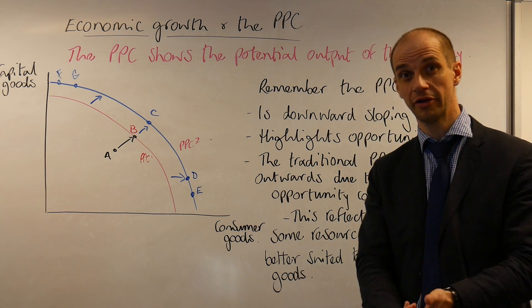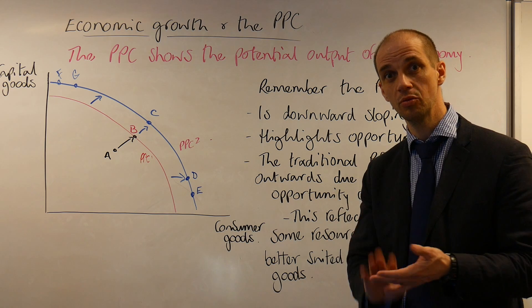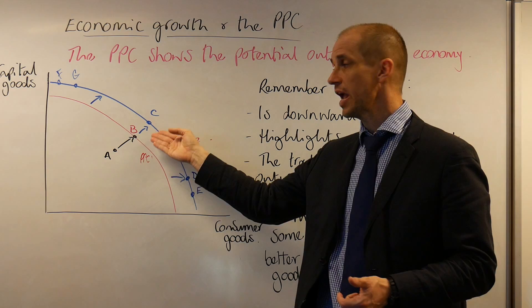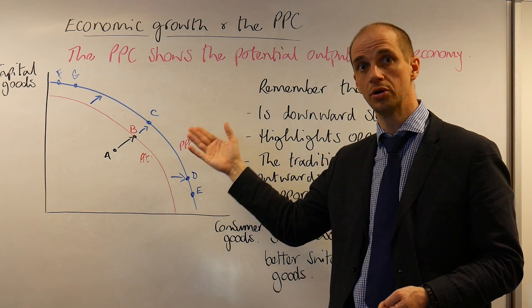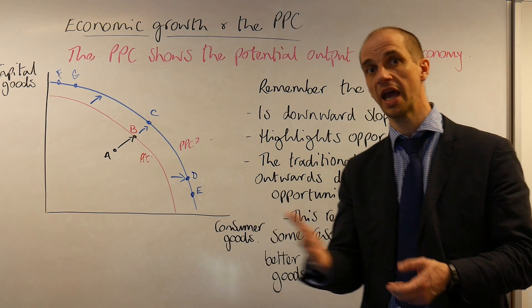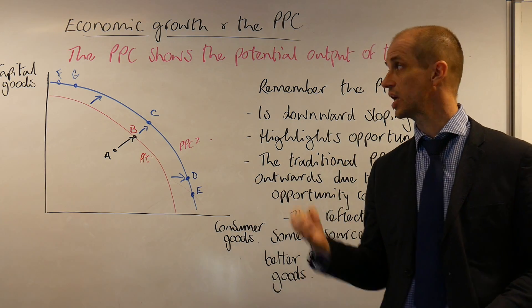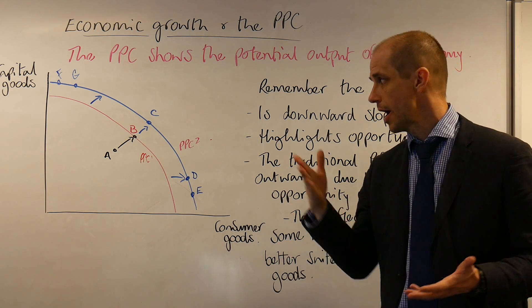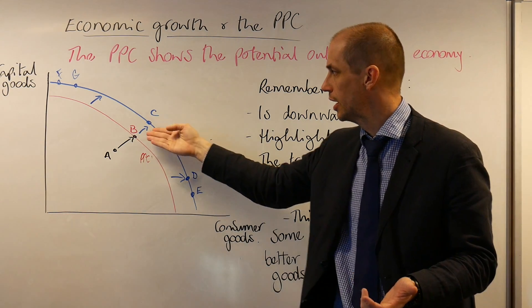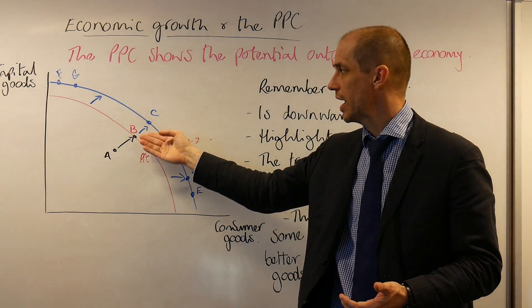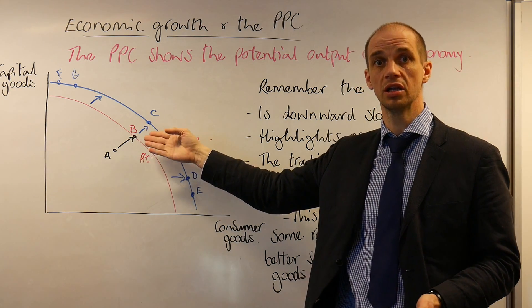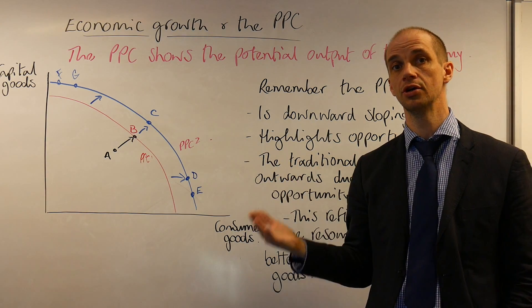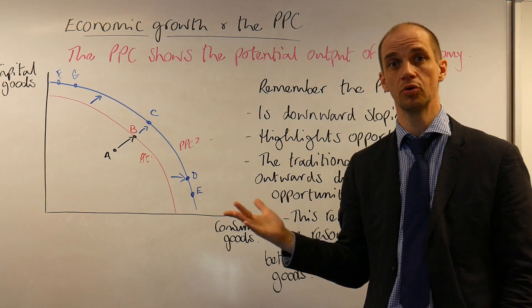Output is a function of land, labour, and capital, together with efficiency and technological progress. If the quality of those factor inputs improves — through better education, better innovation with regard to capital goods and technology, and better efficiency due to improved infrastructure — then the productive capacity of the economy can shift outward, and the economy can attain a new production possibility curve and possibly reach point C.